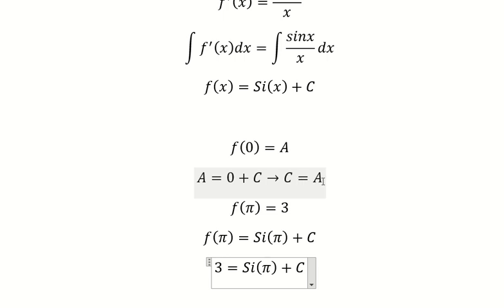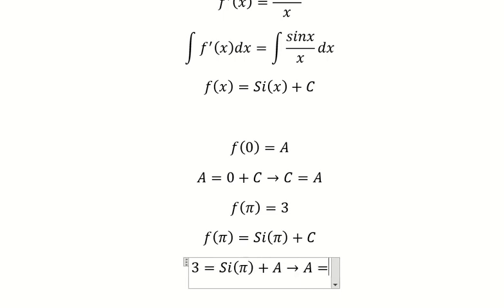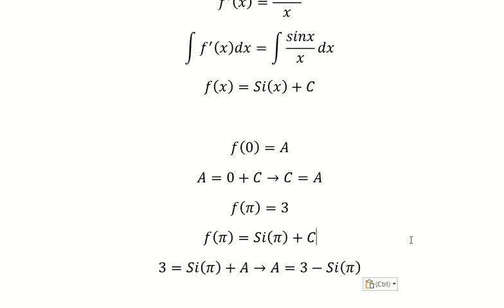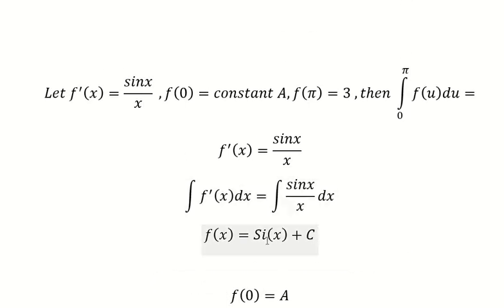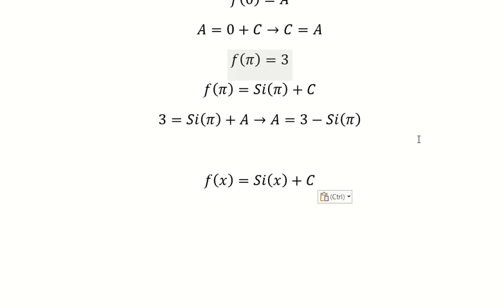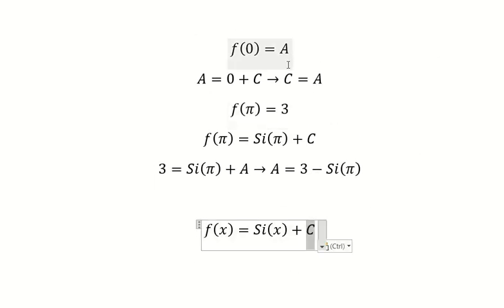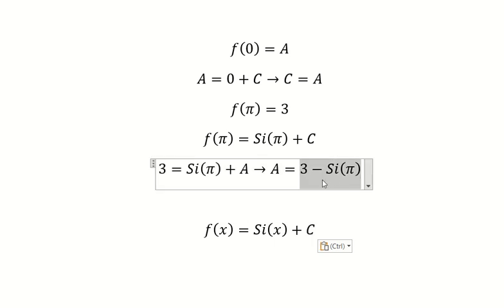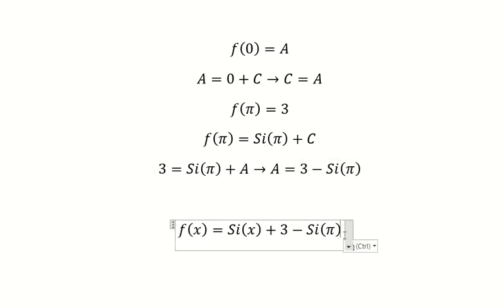We can see that C equals to A, and eight equals to number three minus sine of b. So now we return back to this one. We see that C equals to A, eight equals to this one, and now we can put this one in here.